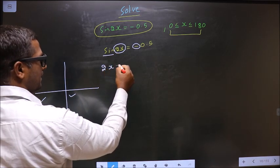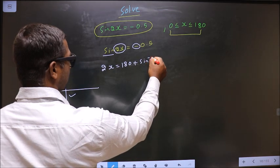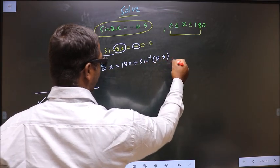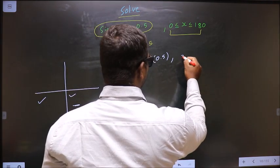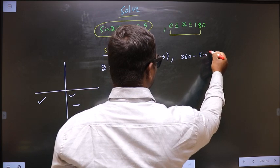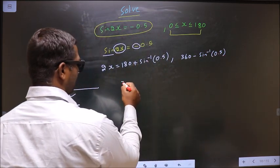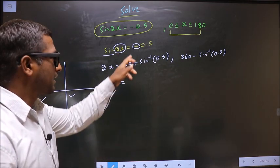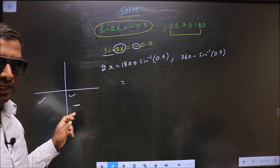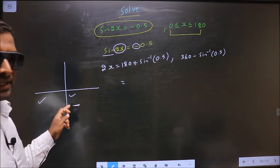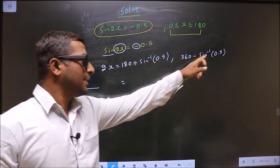So now to get an angle in the third we should do 180 plus sin inverse 0.5. To get an angle in the fourth we should do 360 minus sin inverse 0.5. Now remember this, the negative sign is used for selecting the quadrants only. Once quadrants have been selected, do not place negative sign here again.